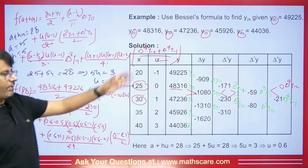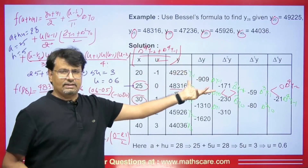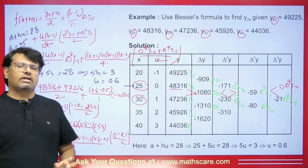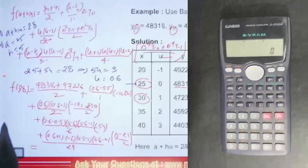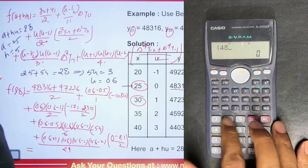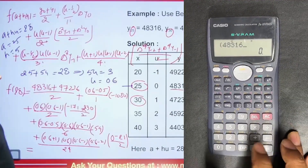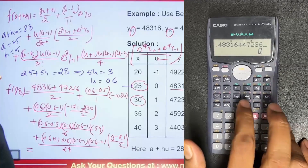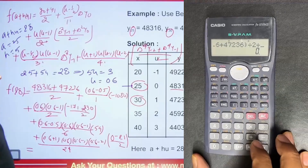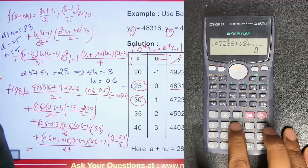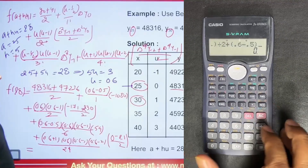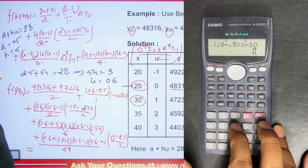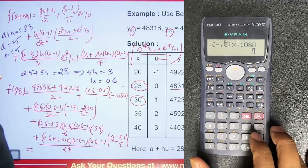So how to solve this in the calculator — it's very important to know how to use the calculator correctly, otherwise the answer could be wrong. Inside the bracket we write: 48316 plus 47236, bracket close, divided by 2. Plus (0.6 minus 0.5), bracket close, times minus 1080.